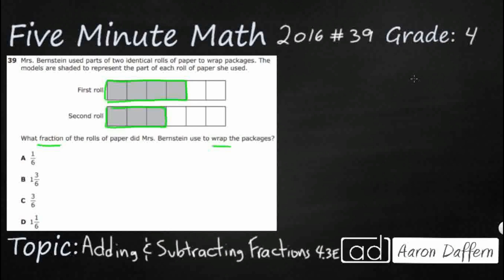We're gonna switch both of these into fractions and so our numerator, our top number, is going to be how many shaded pieces there are. So how many parts did she use? She's got 1, 2, 3, 4. Our denominator, our bottom number, is going to be how many total pieces there are—5, 6. So she used 4/6 of the first roll.